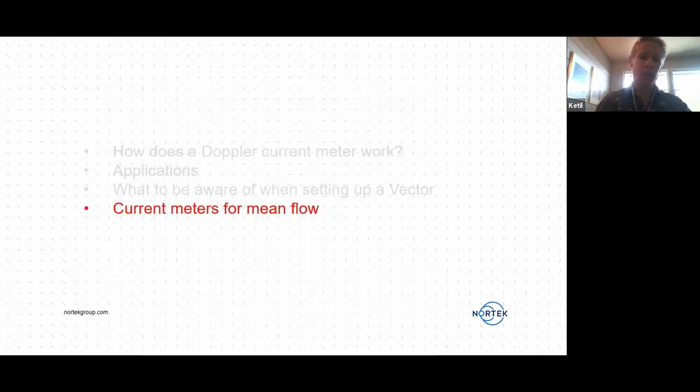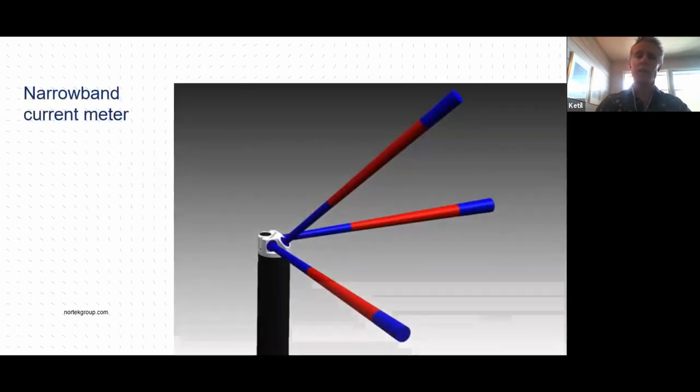So that was the vector. Then the second group of single point sensors that Nortek make is what we call the mean flow current meters. This is an instrument called the Aquadop. This is what we call a narrow band current meter. So here we send out single pulses and we measure directly the frequency shift along each of the beams that comes back from particles in the water.